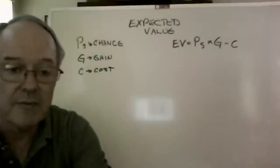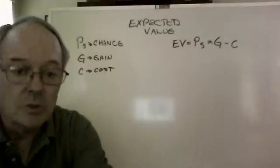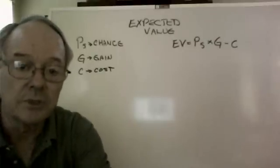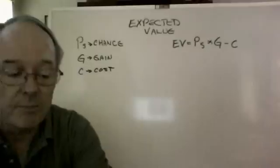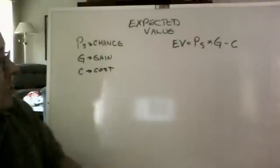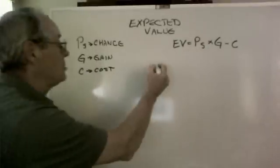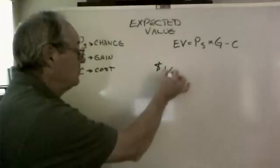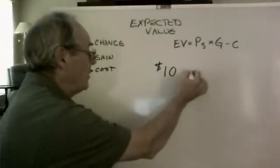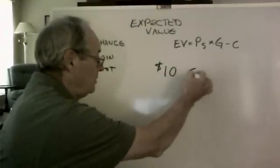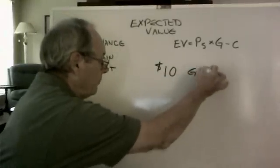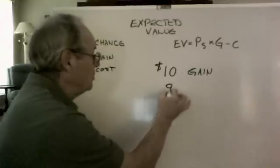Let's simplify it even more than that. We all use expected value when we're making simple decisions. Let me show you an example. Suppose I offered you an opportunity to purchase $10, and the cost, so that's the gain, and it's going to cost you $9.